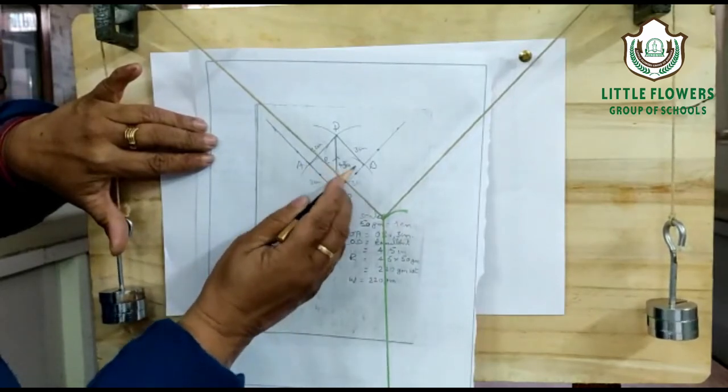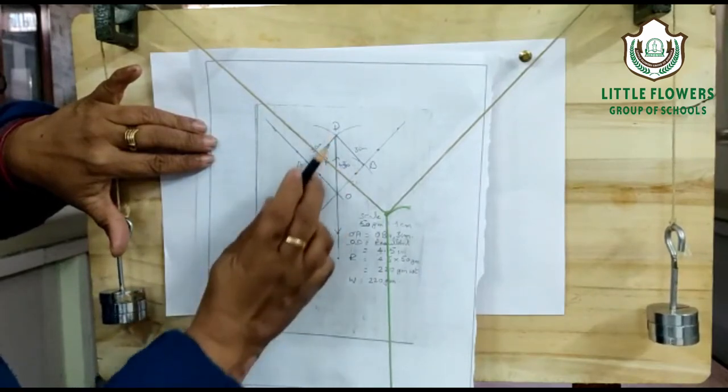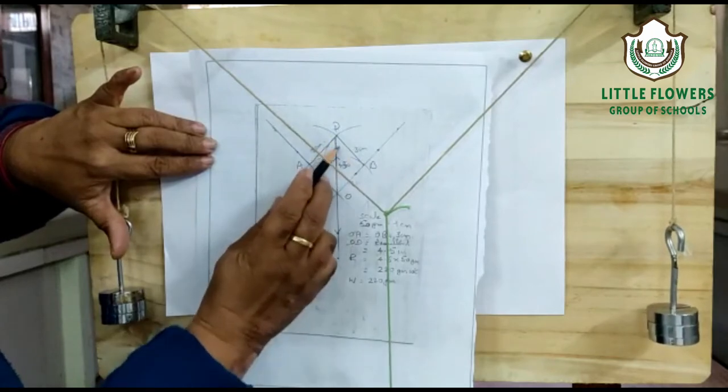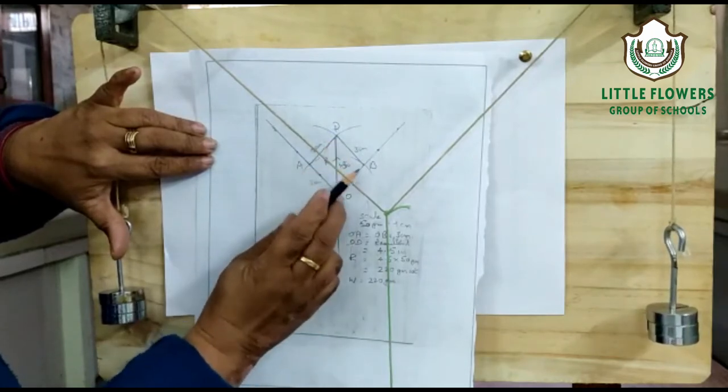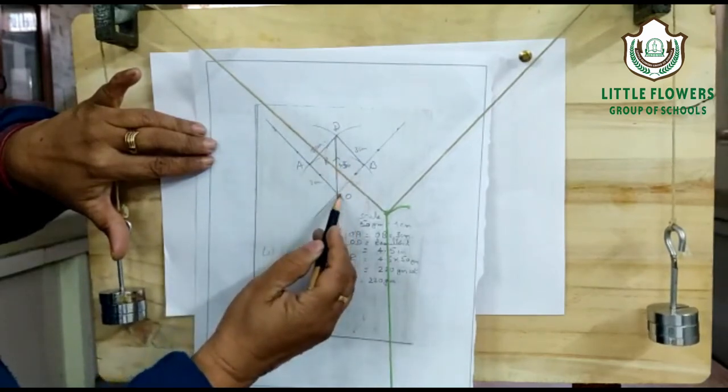Now, from points A and B, mark another arc which meets at point D. We get three arcs. Let us join them. By joining, we get the intersection point here. After getting the intersection point, mark the line from D to O. OD represents the resultant.